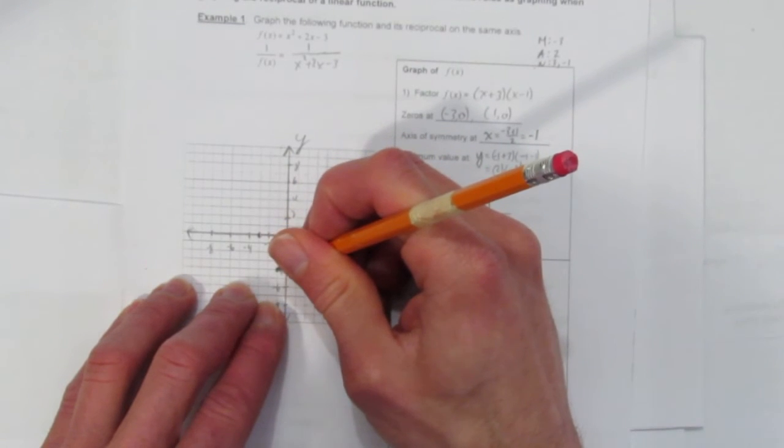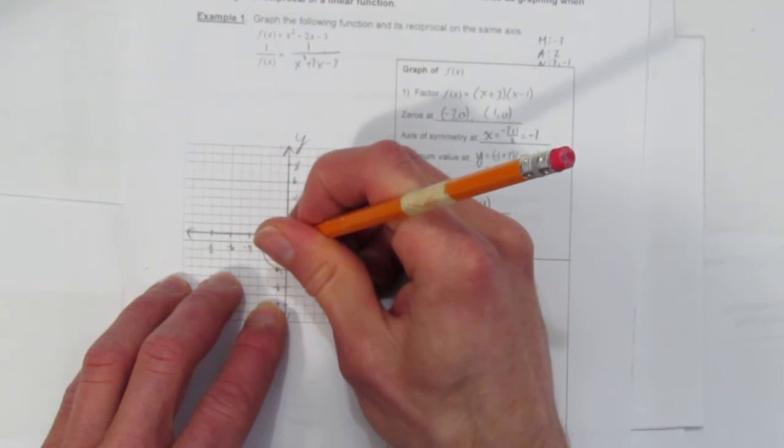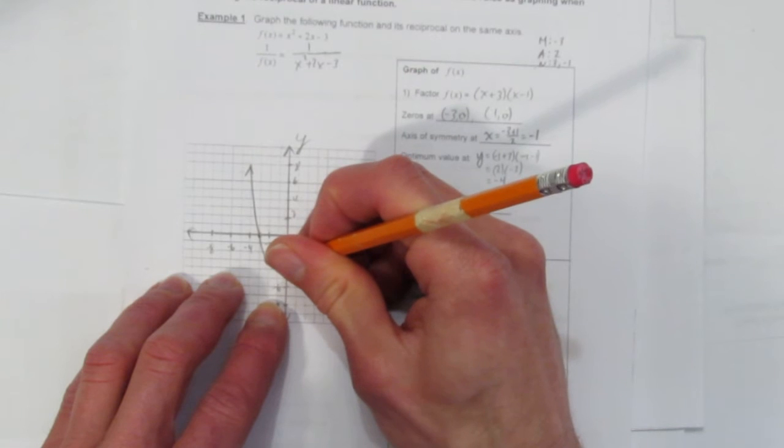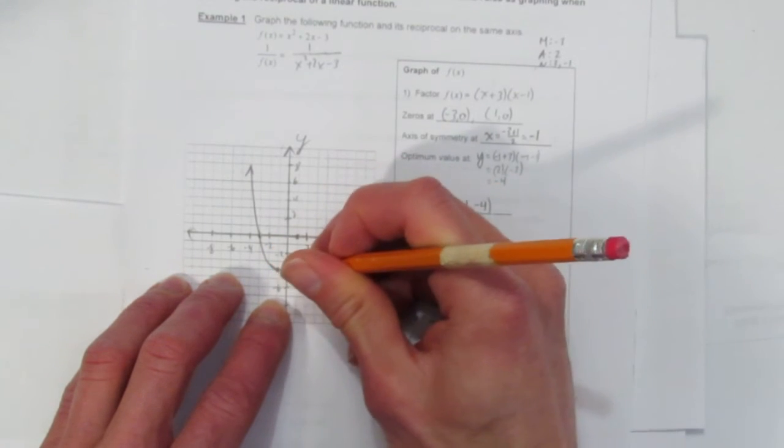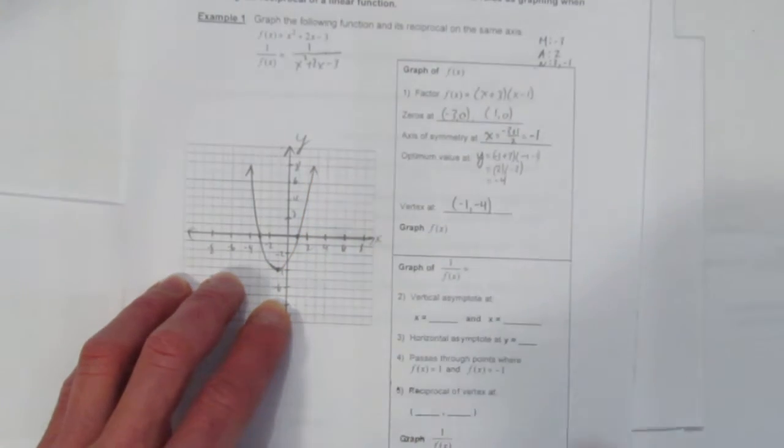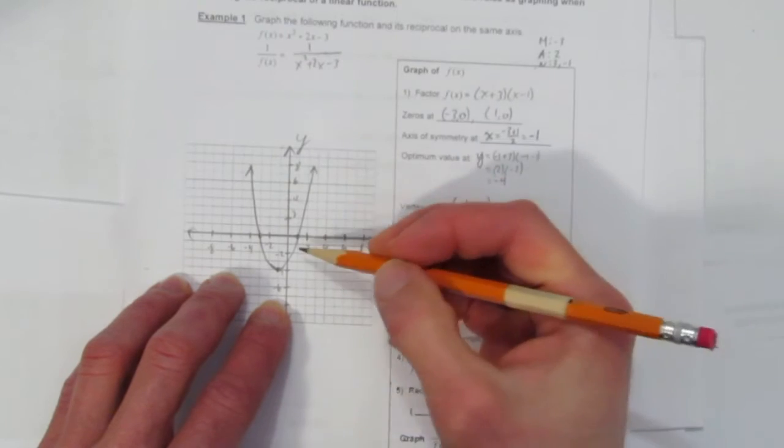And we'll do our best to connect them together. Make sure this looks like a u and not a v. Parabolas never have sharp curves. They always curve around in a u shape. There's our parabola. Our original function with its two zeros.